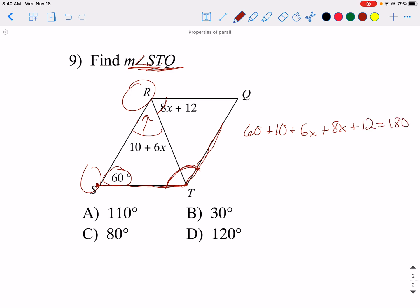So it's just a matter of combining like terms now. So I get 14x. 60 plus 10 is 70. 70 plus 12 is 82. I'm going to subtract 82 from both sides. So 180 minus 82 gives me 98. Then I'm going to divide that. 98 I'm going to divide by the 14. So x equals, let me see, divide it by 14. x equals 7.